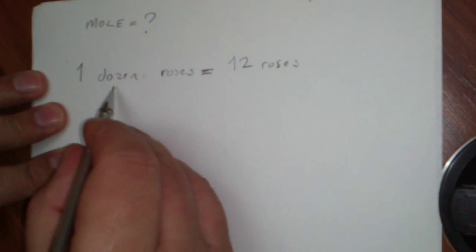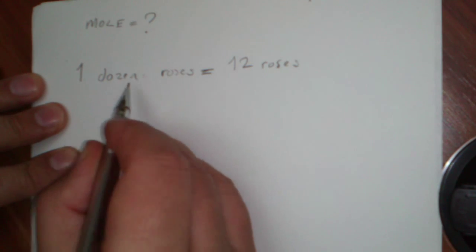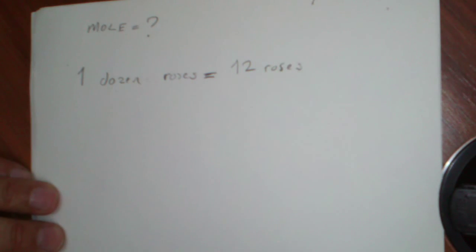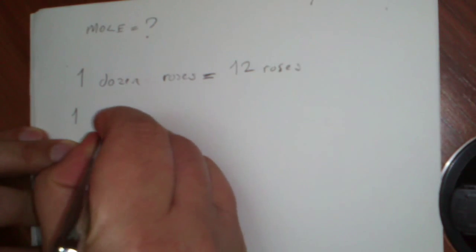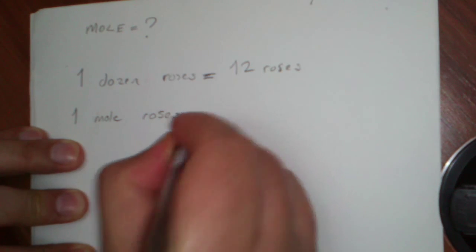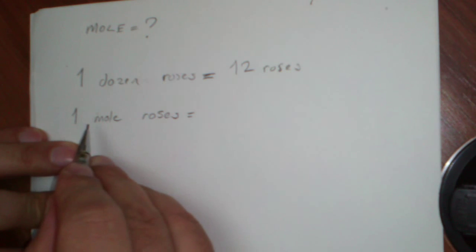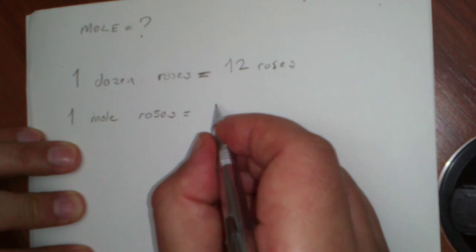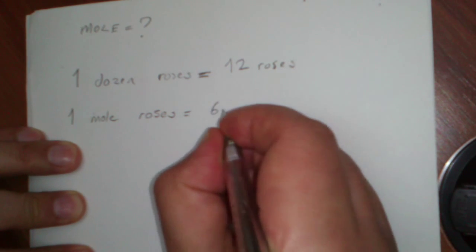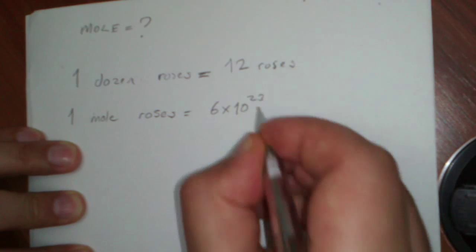Mole is just a concept like dozen. We count roses with dozens. We are synthetically, grammatically, and logically exactly right to write down something like 'one mole roses.' There is no logical, grammatical, or syntactical mistake here. And this means — one mole means, in short — six times ten to the power of twenty-three roses.